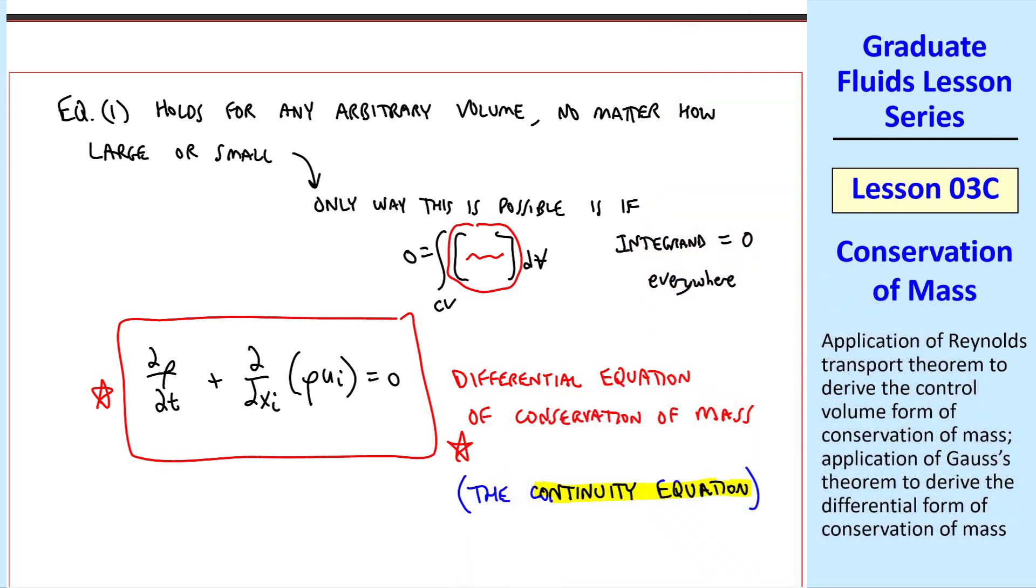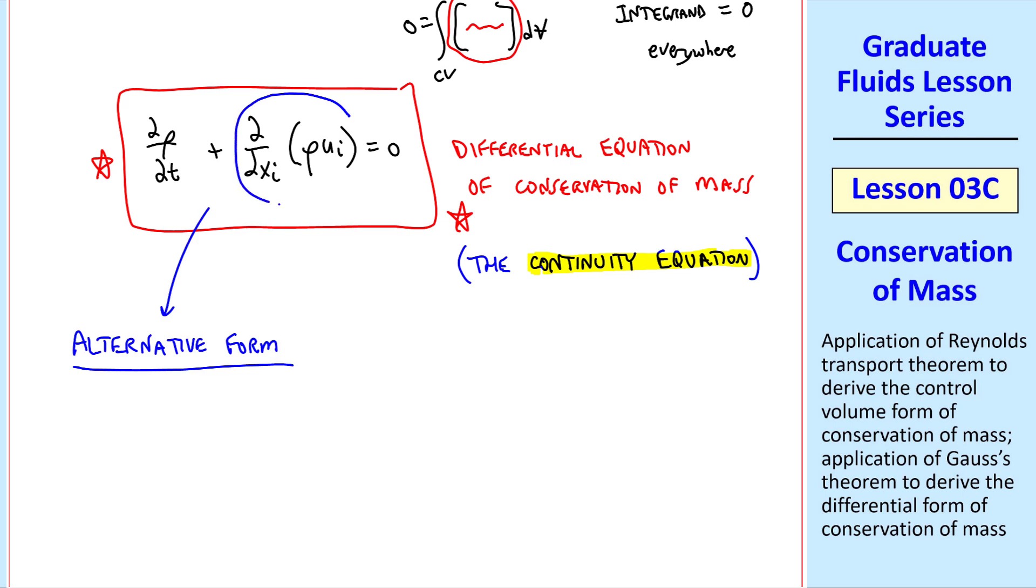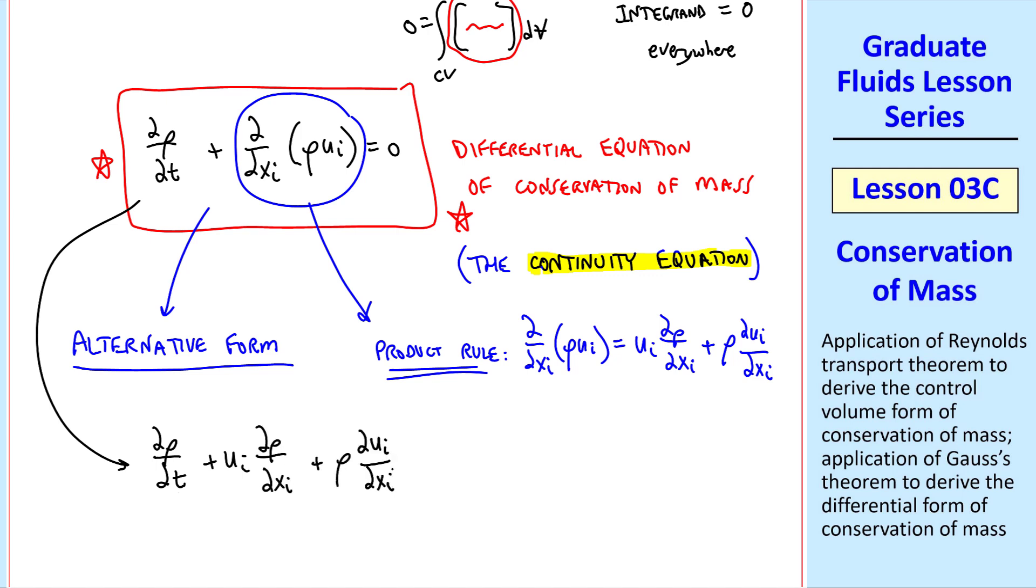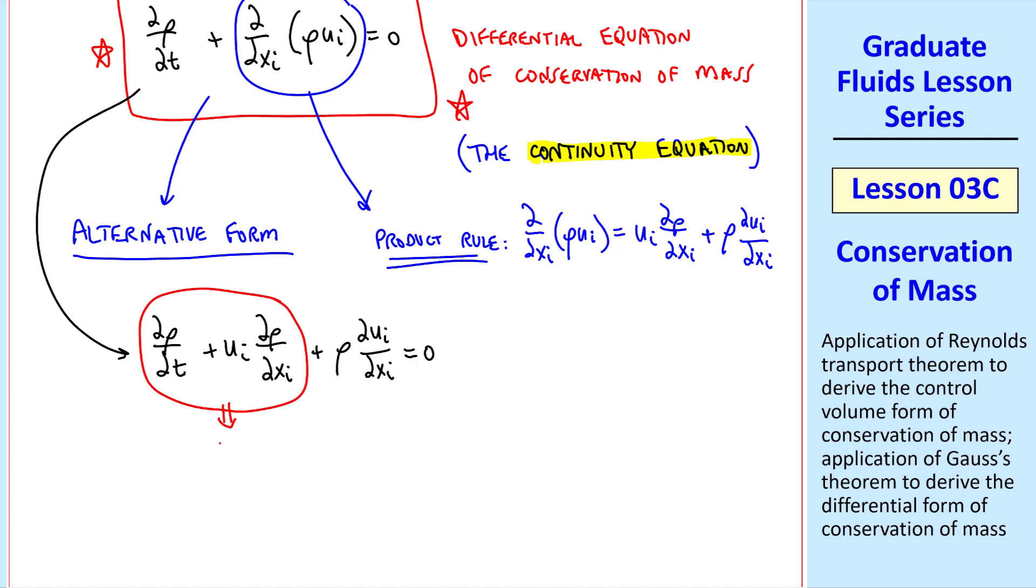As a preview of coming attractions, we'll do this with linear momentum and energy as well. Right now, however, I want to show you an alternative form of this equation. Namely, let's expand this using the product rule. Del del xi of rho ui is ui del rho del xi plus rho del ui del xi. So our continuity equation becomes del rho del t plus ui del rho del xi plus rho del ui del xi equals 0. When I teach this live, I ask my students if they can identify this grouping of terms. Someone always recognizes it as the material derivative.